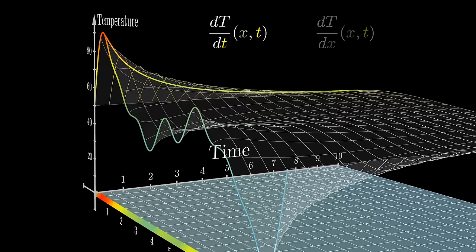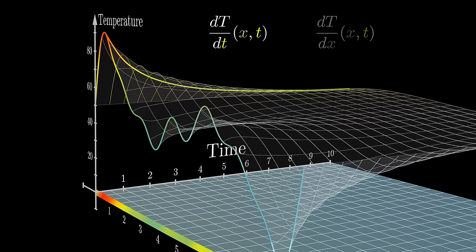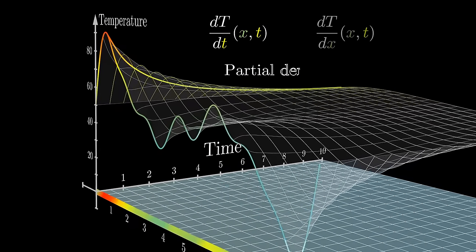Each one of these derivatives tells only part of the story for how this temperature function changes, so we call them partial derivatives.